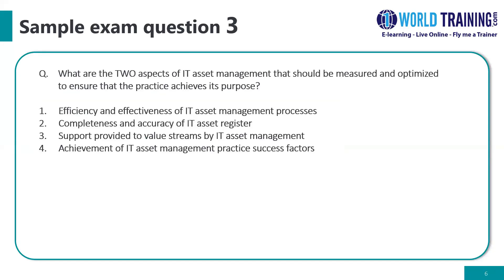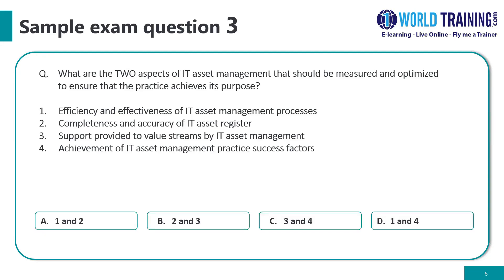Question number three. What are the two aspects of IT asset management that should be measured and optimized to ensure that the practice achieves its purpose? One: efficiency and effectiveness of the IT asset management processes. Two: completeness and accuracy of the IT asset register. Three: support provided to value streams by IT asset management. Four: achievement of IT asset management practice success factors. This is a list-type question where each answer option A through D is a combination of two of the four items listed, and you need to pick the correct pair.